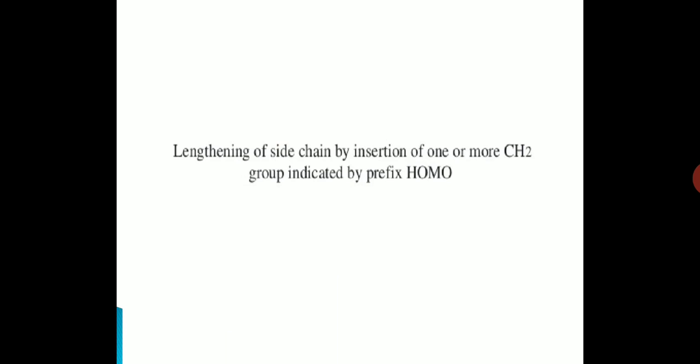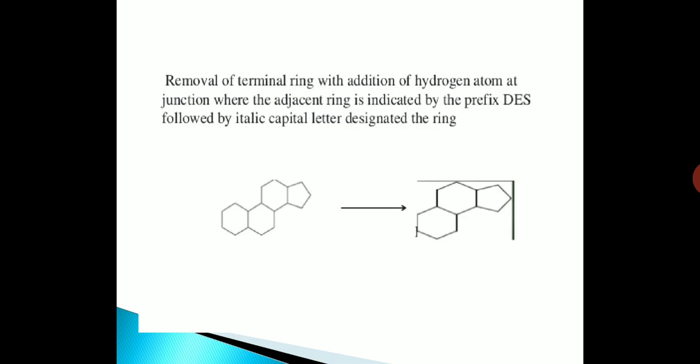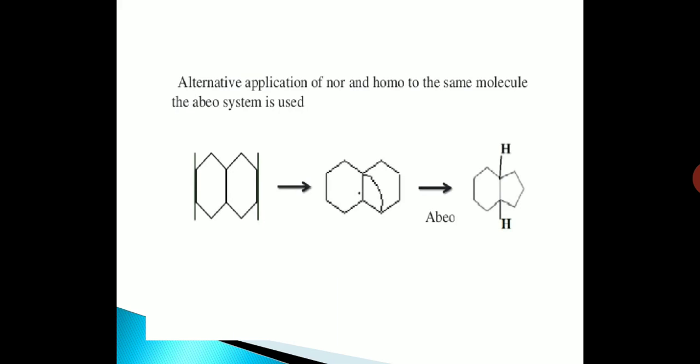Lengthening of the side chain by insertion of one or more CH₂ groups is indicated by the prefix 'homo'. Removal of a terminal ring with addition of a hydrogen atom at the junction where the adjacent ring is indicated by the prefix 'des', followed by the italic capital letter designating the ring. Alternative application of 'nor' or 'homo' to the same molecule uses the ABO system.